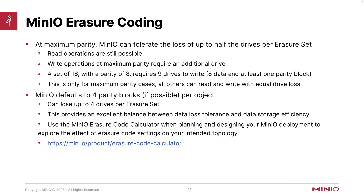MinIO defaults to four parity blocks per object where possible, which is a nice default for a set size of 16. This provides a good balance between data loss tolerance and storage efficiency. At full parity, you have an equal number of parity and data blocks, meaning every object you upload is essentially twice the size. With four parity blocks on a stripe of 16, you're at 75% storage efficiency — 12 data blocks plus 4 parity means you're adding an extra quarter on every object.